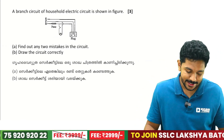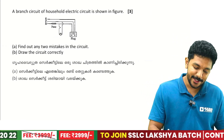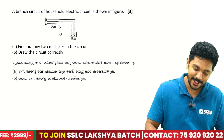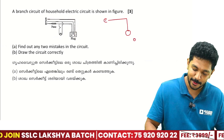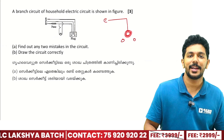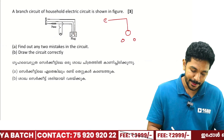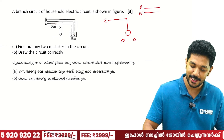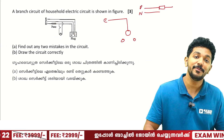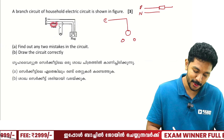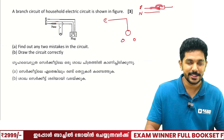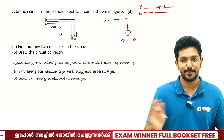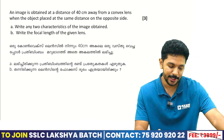A branch circuit of a household electric circuit is shown — find any two mistakes. The first mistake: the fuse is connected on the neutral wire instead of the live (phase) wire. In a correct circuit, the main fuse must come on the phase/live wire. Here the neutral wire is connected first, which is wrong — there is no fuse on the live wire.